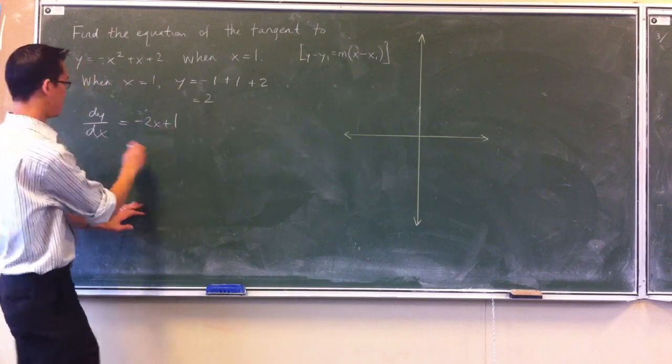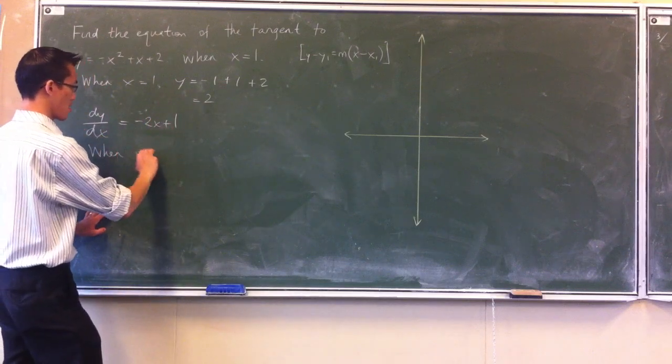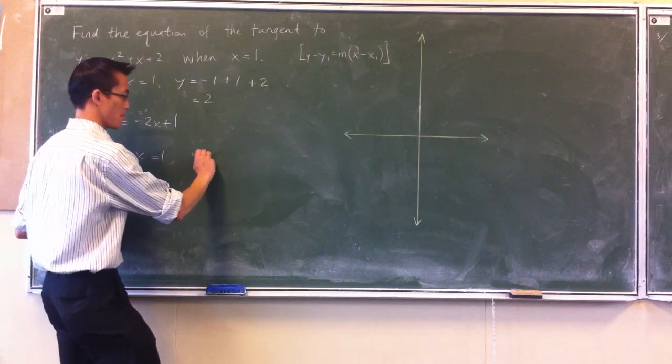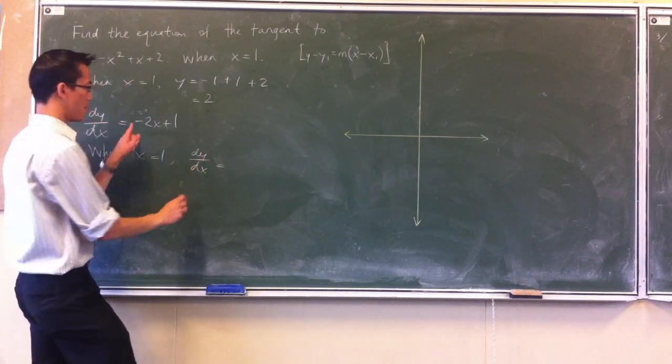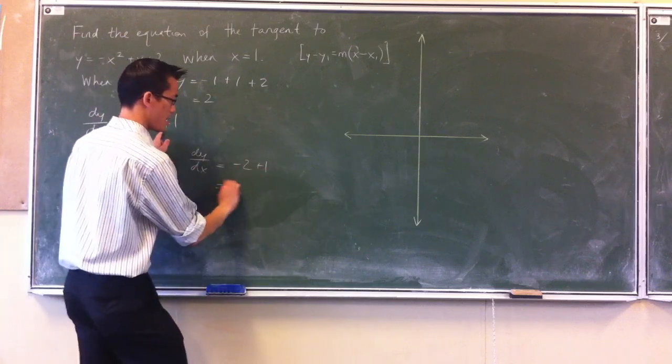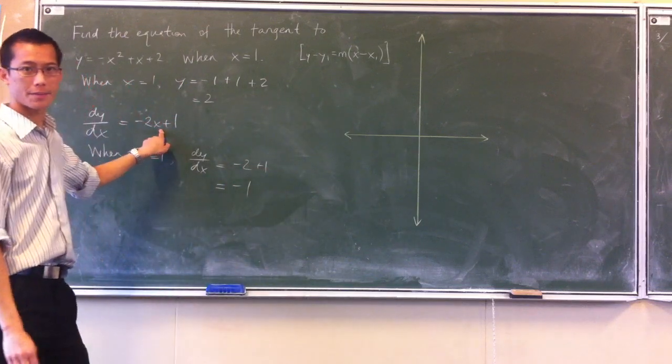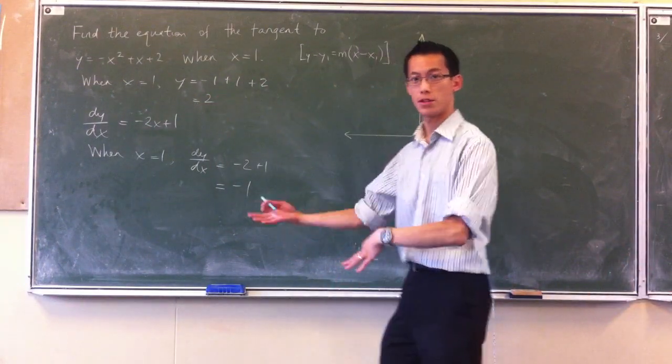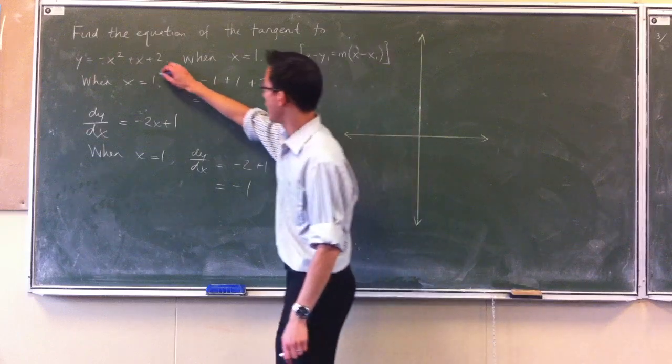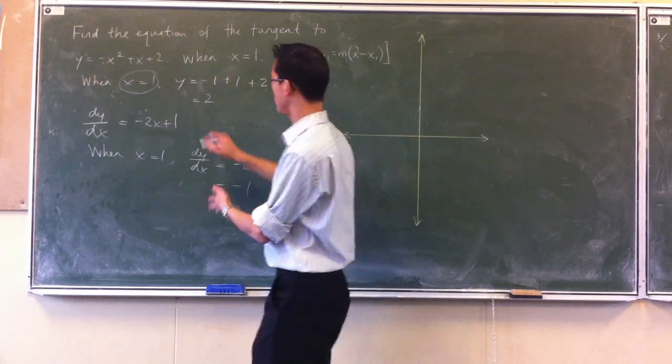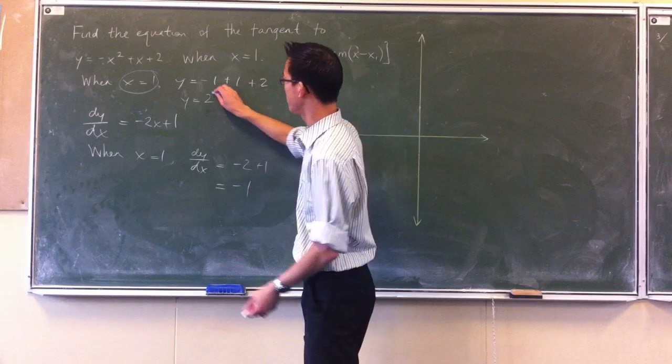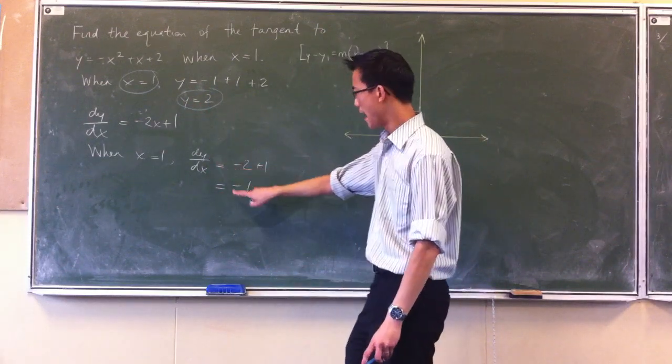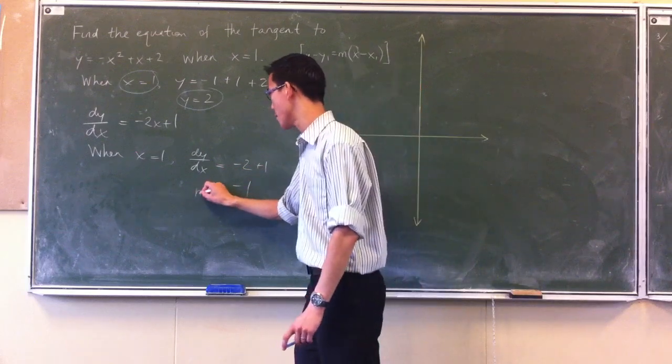What's the derivative equal to? It'll be equal to minus 2 plus 1. So there is my gradient. So now I have the pieces I need to actually substitute into the equation. I've got my x1, I've got my y1 here, and now I've also got this dy/dx at this particular point—that's the m that I'm after.